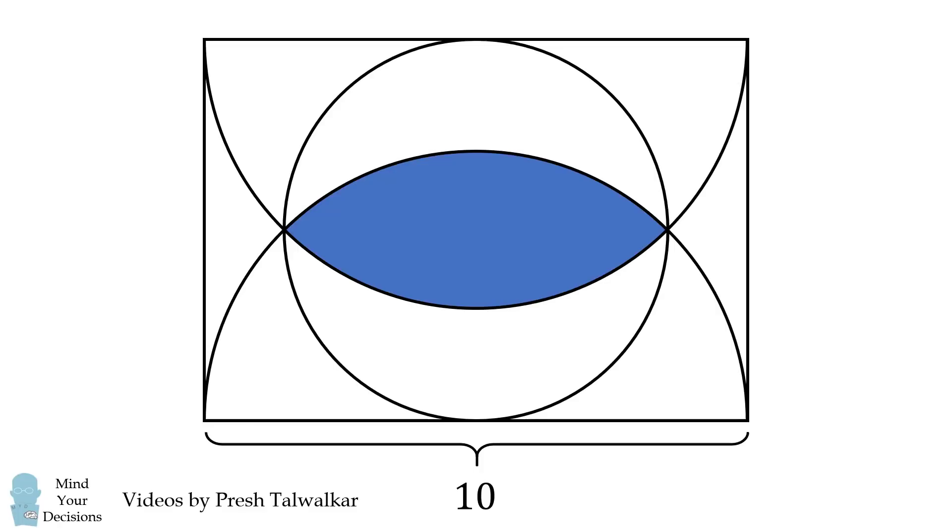The question is, what is the area of the region that's overlapping between the two semicircles? Pause the video if you'd like to give this problem a try, and when you're ready, keep watching to learn how to solve this problem.